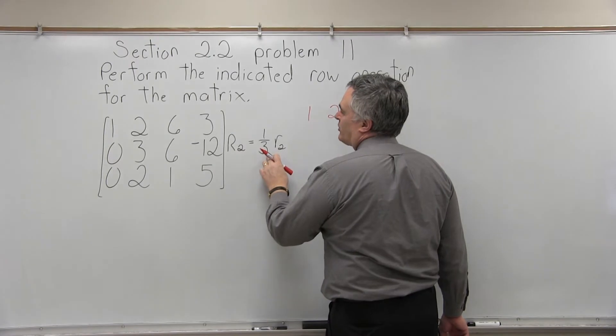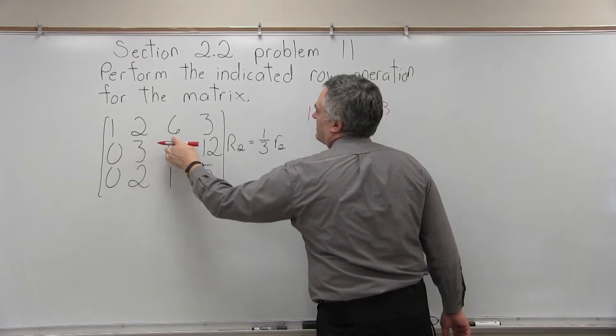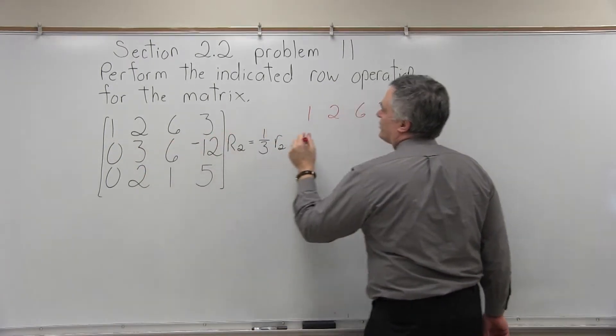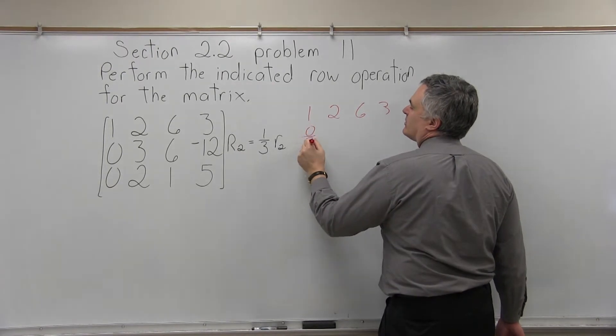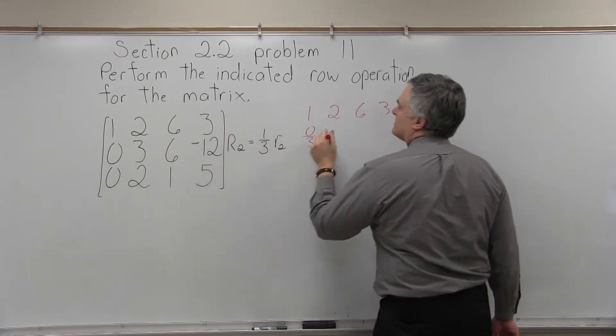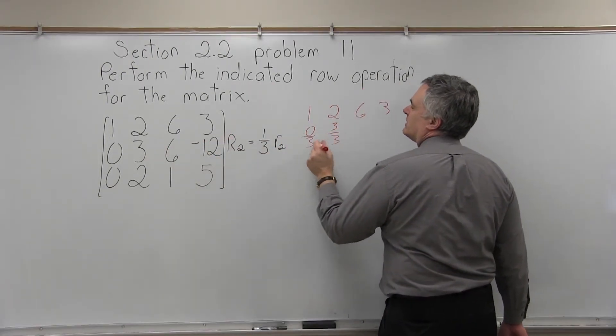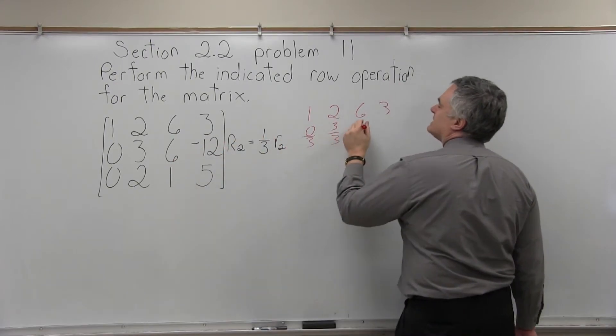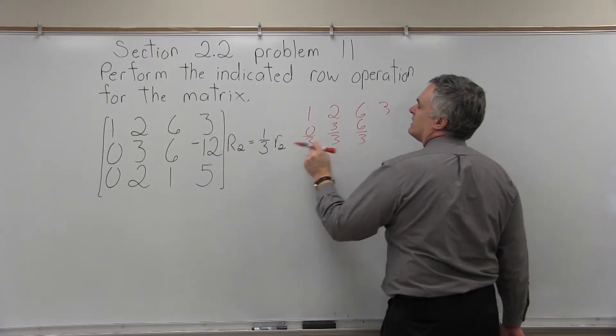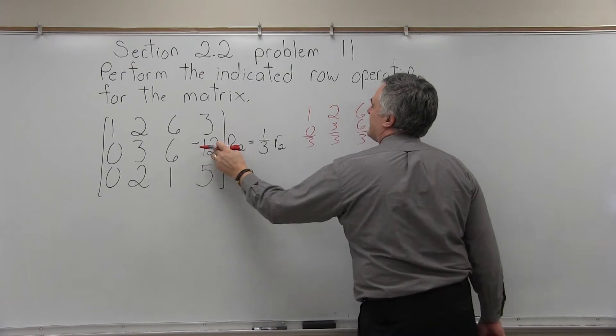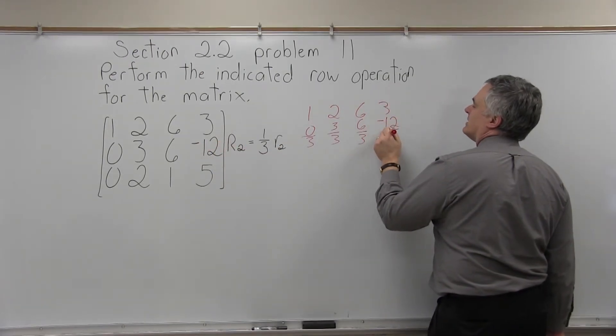Now, we're going to do 1/3rd times every item in row 2. So 1/3rd times 0 is 0 over 3, 1/3rd times 3 is 3 over 3, 1/3rd times 6 is 6 over 3, and 1/3rd times negative 12 is negative 12 over 3.